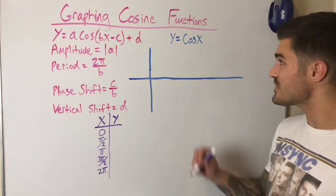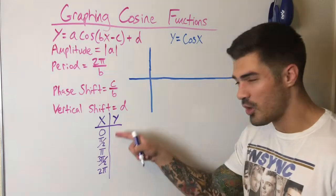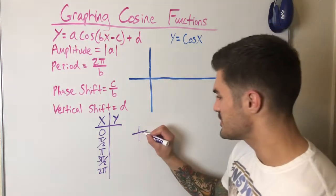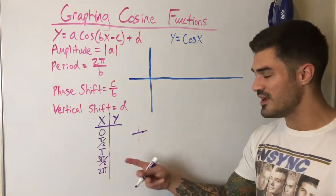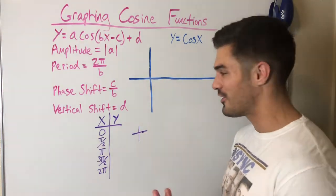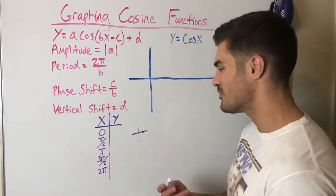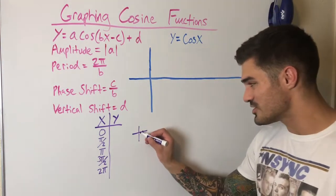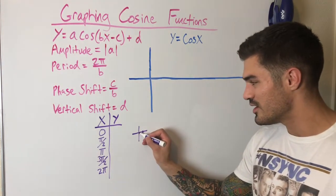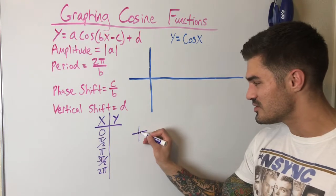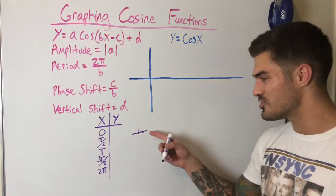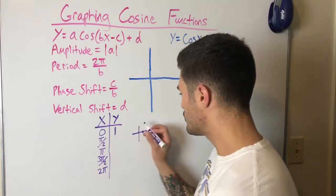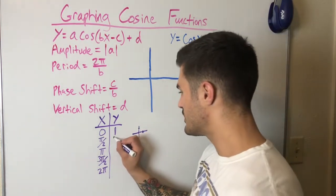These are all quadrantal angles, meaning they lie on one of the axes. To evaluate any quadrantal angle, I think about x, y, and r, and use the definition of cosine which is x over r. At 0, my x is 1 and r is 1 on the unit circle — x and r are always equal at that angle — so cosine of 0 is 1.